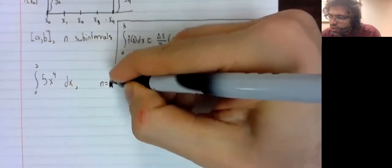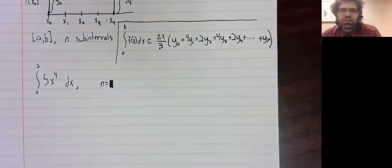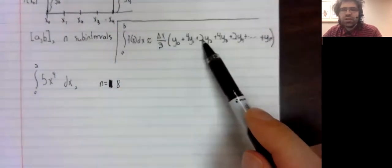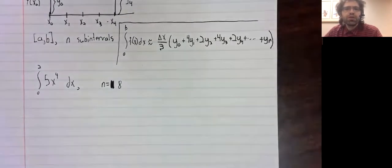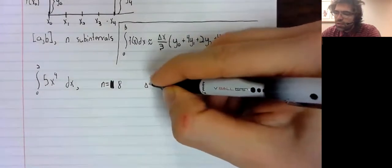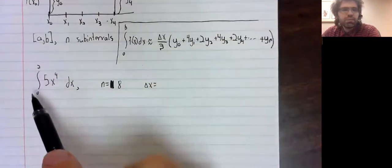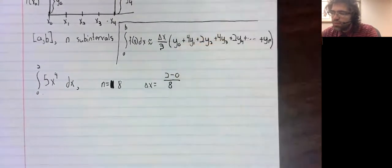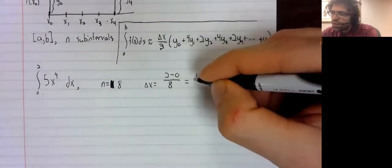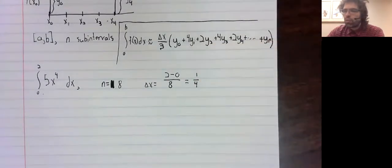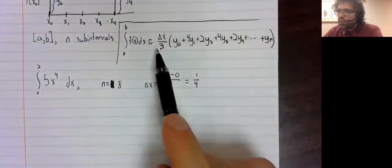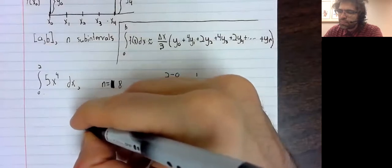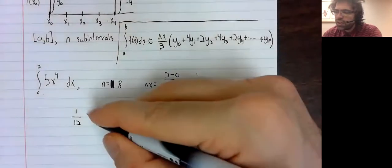And actually, I'm going to make a change from the notes. Instead of four intervals, I'll use eight intervals so that you can see this alternating pattern clearly. Delta X will be B minus A divided by eight or one-fourth. Delta X divided by three, one-fourth divided by three is one-twelfth.